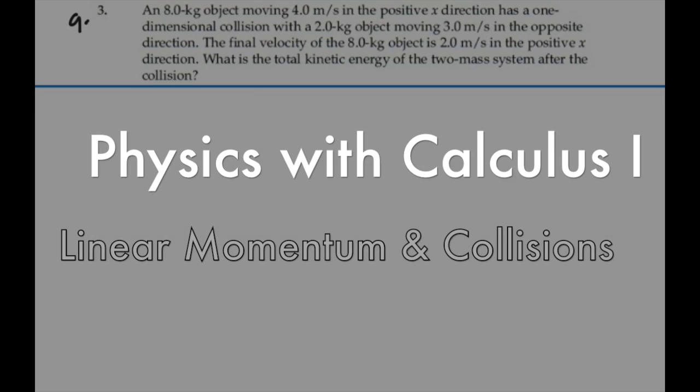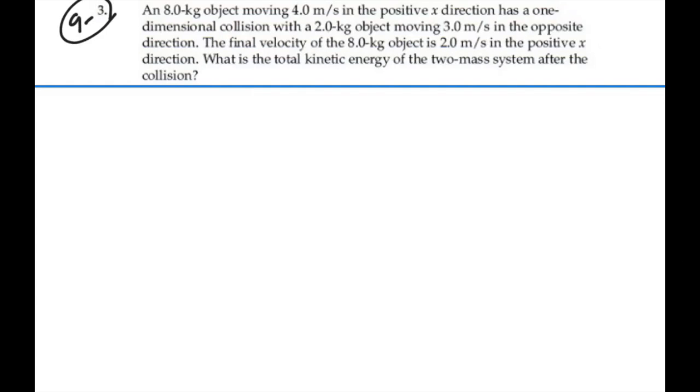Here's problem 9.3. An 8 kilogram object moving 4 meters per second in the positive x direction has a one-dimensional collision with a 2 kilogram object moving 3 meters per second in the opposite direction. The final velocity of the 8 kilogram object is 2 meters per second in the positive x direction. What is the total kinetic energy of the two-mass system after the collision?